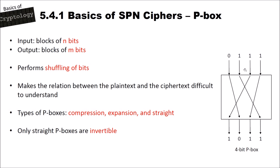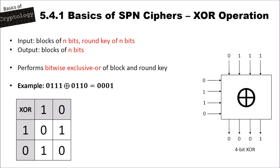The XOR operation inputs a block of n bits and a round key of n bits, and outputs n bits by performing a bitwise exclusive-OR of the block and the round key. For example: 0111 XOR 0110 = 0001. The XOR table: 1 XOR 1 = 0, 1 XOR 0 = 1, 0 XOR 1 = 1, 0 XOR 0 = 0.